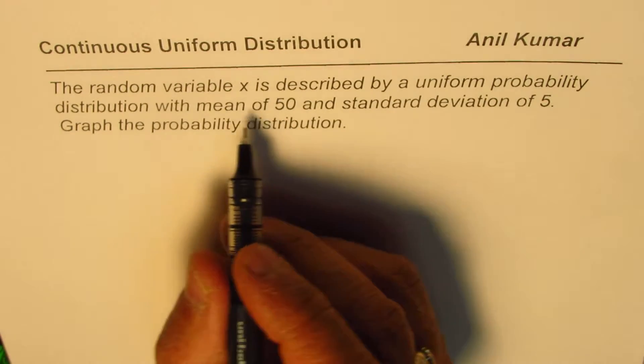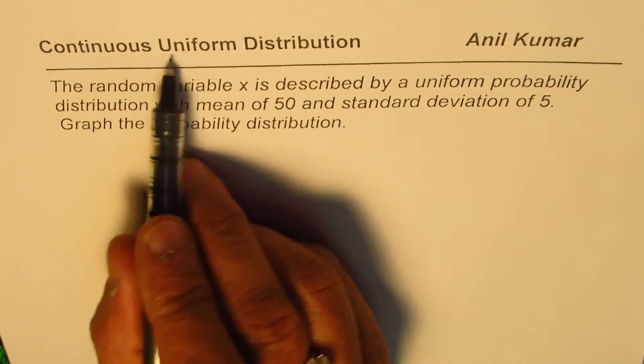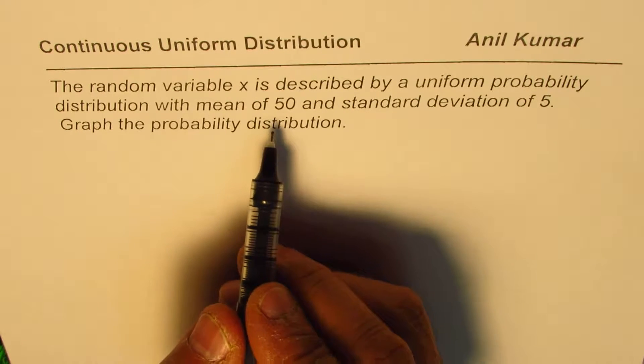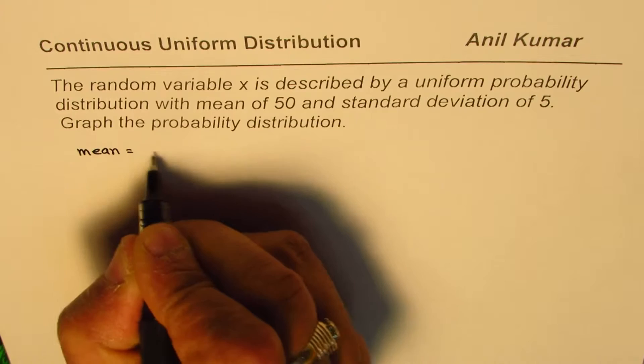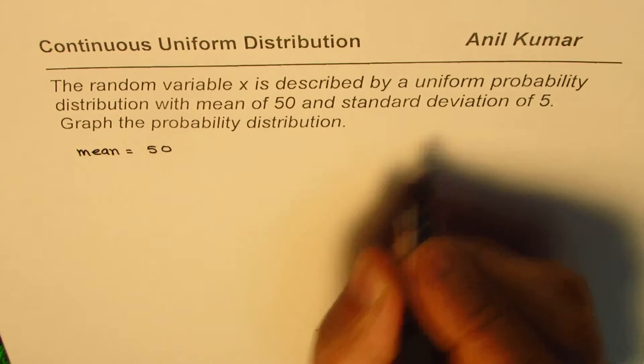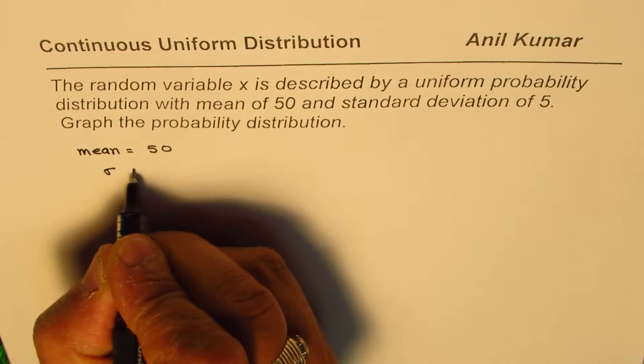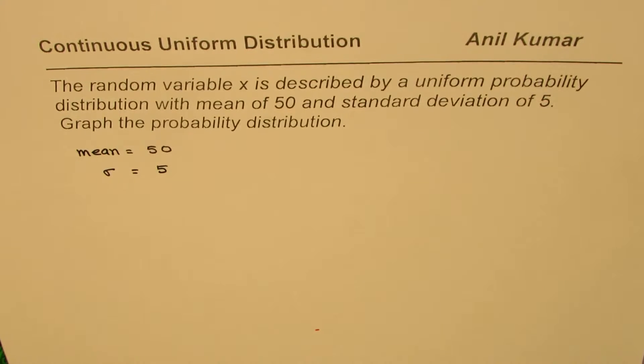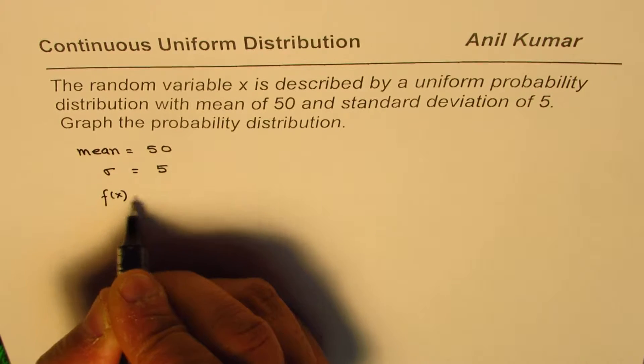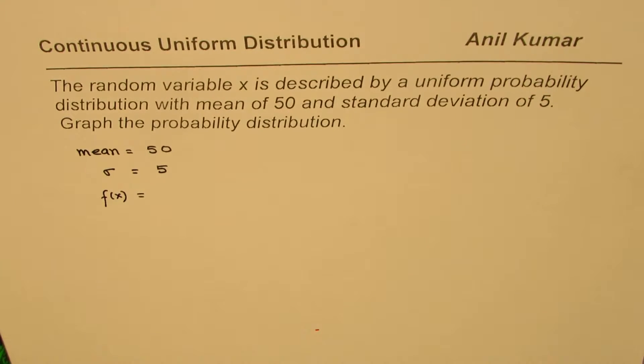So we are given a continuous uniform distribution where the mean is equal to 50 and standard deviation sigma is given to 5. That is what is given to us. We need to find the function f of x. So let us see how to figure this out.